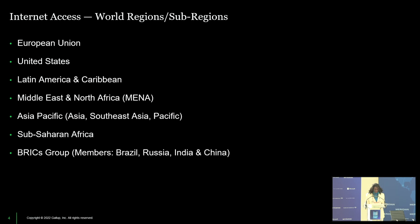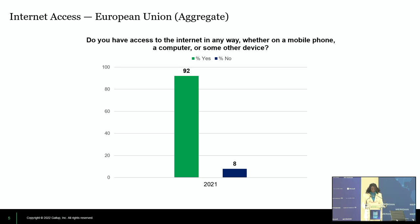I'm going to break this down by world regions and sub-regions, starting with the European Union — first the aggregate, then the bi-country view. In this particular survey, 26 of the 27 current EU countries were polled. You can see the high percentage of those who are connected and the small percentage who are not. We'll get to why — particularly in terms of gender, age, and ethnicity in many cases.